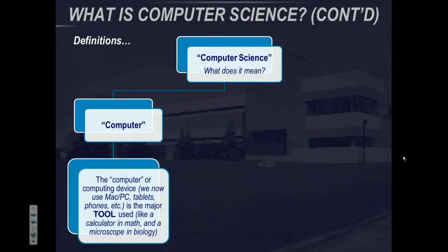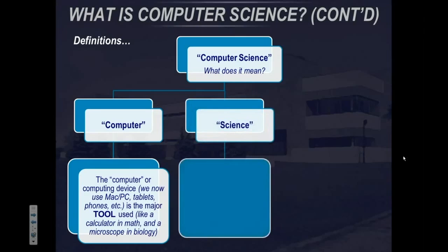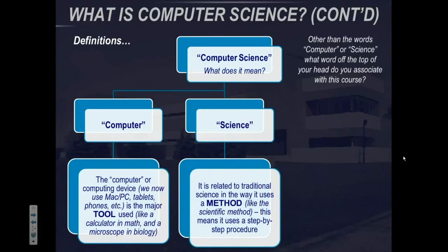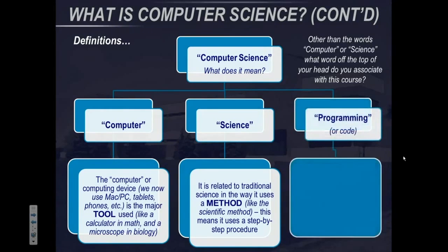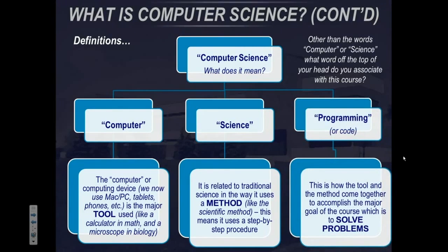But let's define some terms. What does computer science mean? The computer is a computing device — we now have a variety of those: Macs, PCs, tablets, phones, etc. It's the major tool used in the course, like a calculator is used in math or a microscope in biology. The word science is related to traditional sciences in the way that it uses a method, like the scientific method — essentially a step-by-step process. What most students associate with computer science is programming or coding, which is how the tool and the method come together to accomplish the major goal: to solve problems.